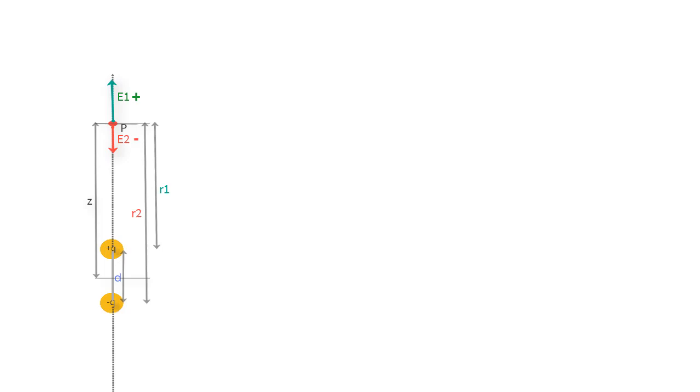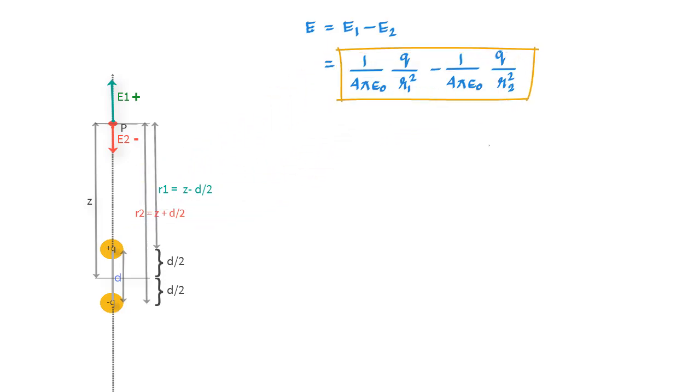We can write the net field at P as E equals E1 minus E2, which equals 1 over 4π epsilon naught q over r1 squared minus 1 over 4π epsilon naught q over r2 squared. You can see that r1 equals z minus d over 2 and r2 is z plus d over 2.